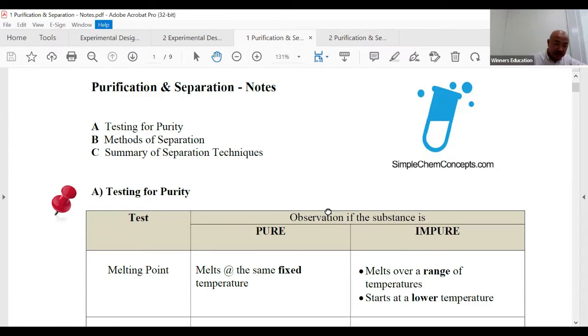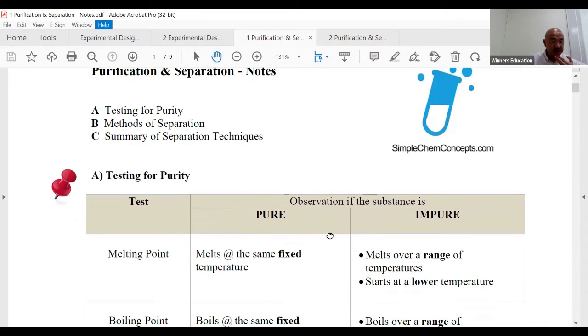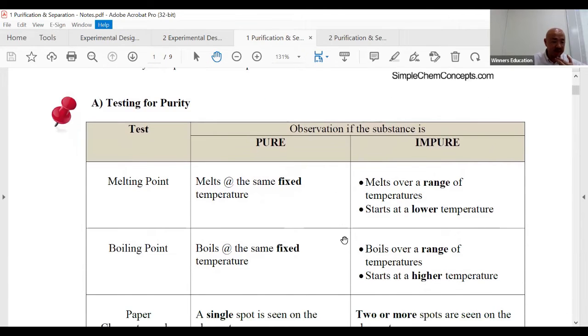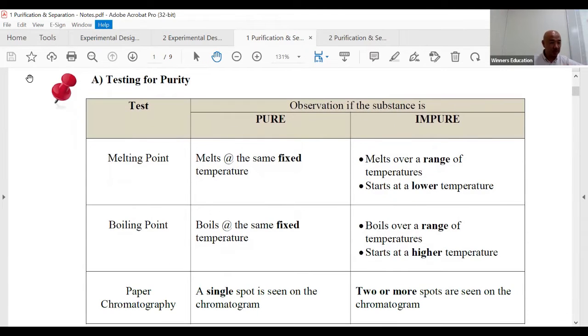All right, so here we go. The three sections: C is more like a summary table. So there are two things - A and B. A is testing for purity, B methods of separation, i.e., separation techniques. So here we go, and this is where people start to lose marks.